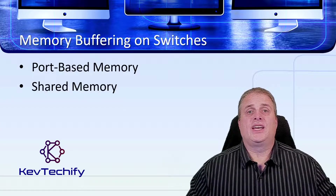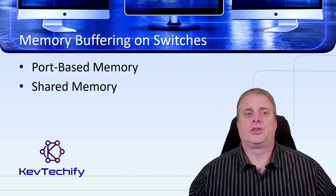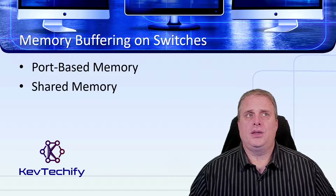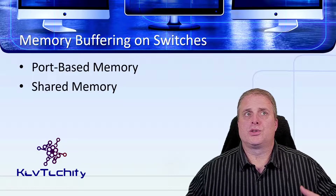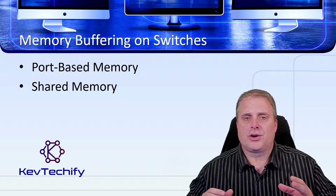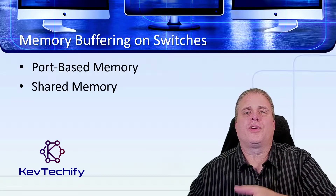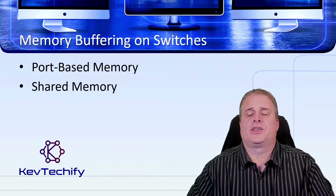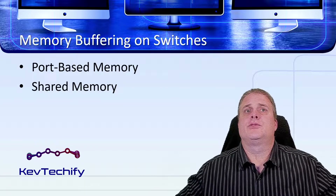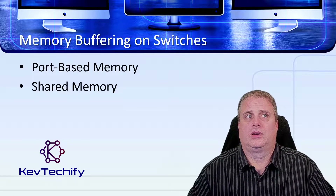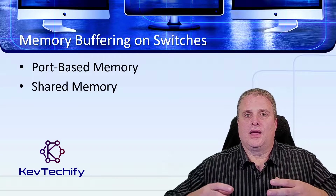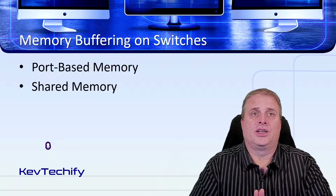When the switch has to store a frame, it uses memory. There are two types of memory buffering on switches: port-based memory and shared memory. With port-based memory, frames are stored in queues linked to specific incoming and outgoing ports. The frame is transmitted to an outgoing port only when all the frames ahead of it in the queue have been successfully transmitted. It's possible for a single frame to delay transmission of all other frames in memory, even if other ports are open.